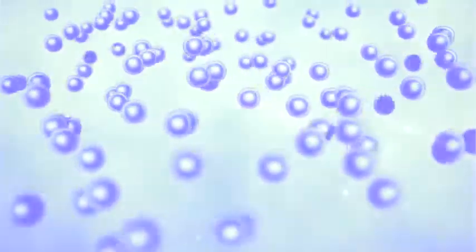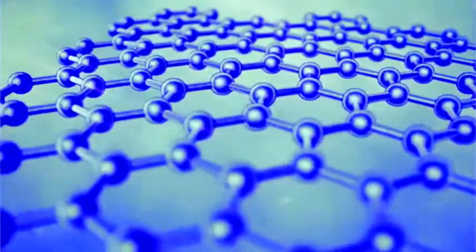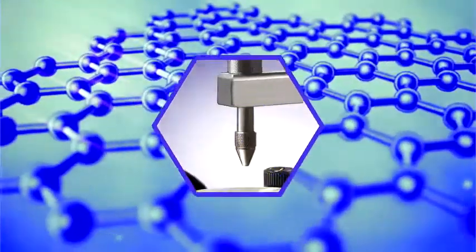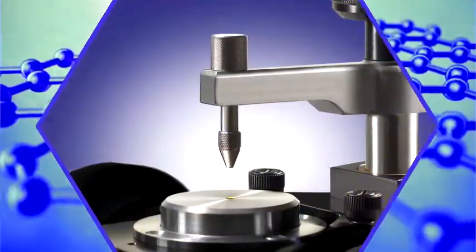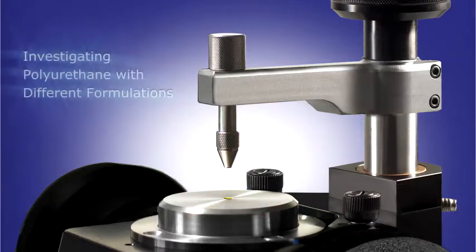In polymer production, it's desirable to have a fast and reliable method to evaluate formula accuracy. Infrared analysis may offer a solution. This video application note illustrates the point by investigating polyurethane with different formulations using ATR sampling.